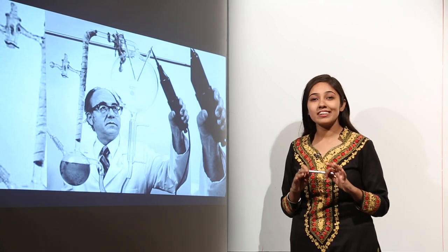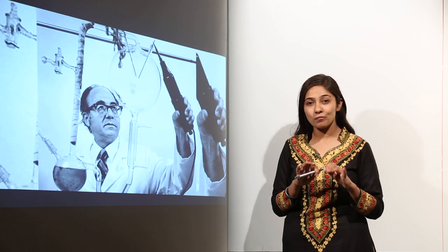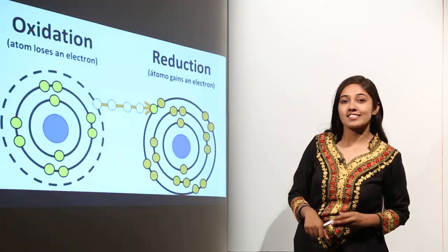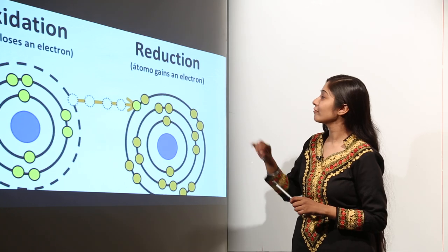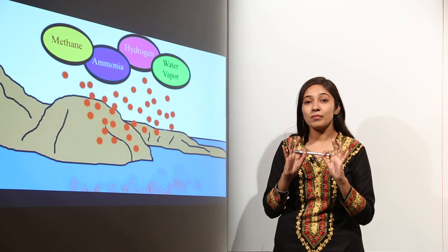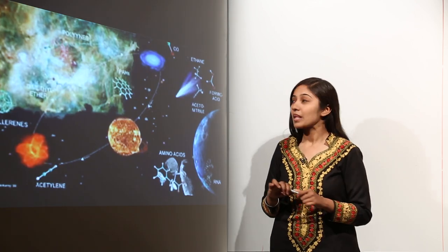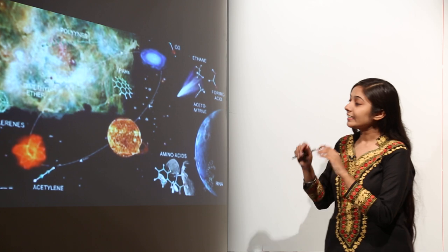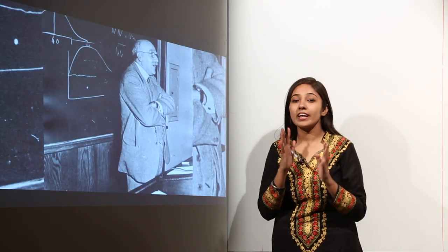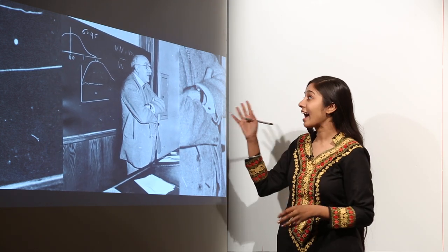Experiments conducted by Miller and Urey proved the theory laid down by Oparin. Oparin gave the hypothesis that the earth initially consisted of a reducing atmosphere in which the main components were methane, ammonia, hydrogen, and water vapour. When combined by some natural processes, these formed the first organic compounds necessary for life, and this theory was further demonstrated by Haldane.